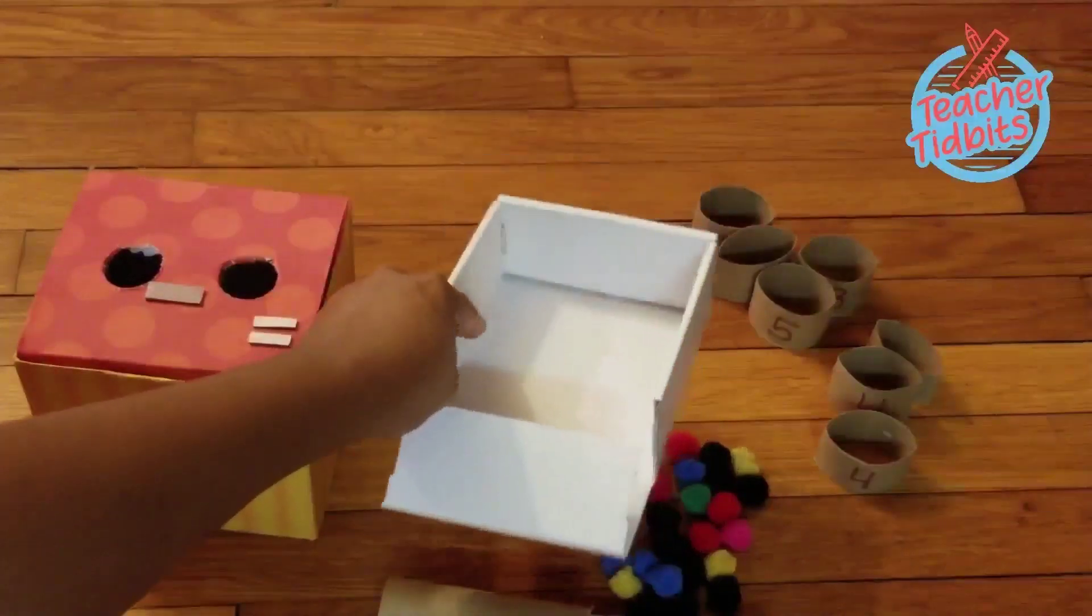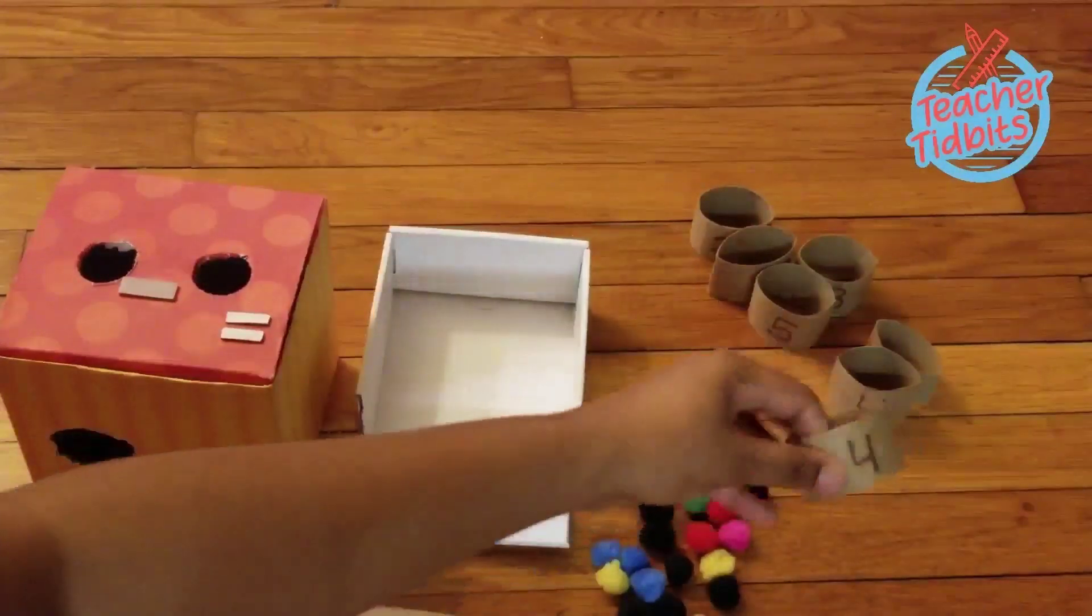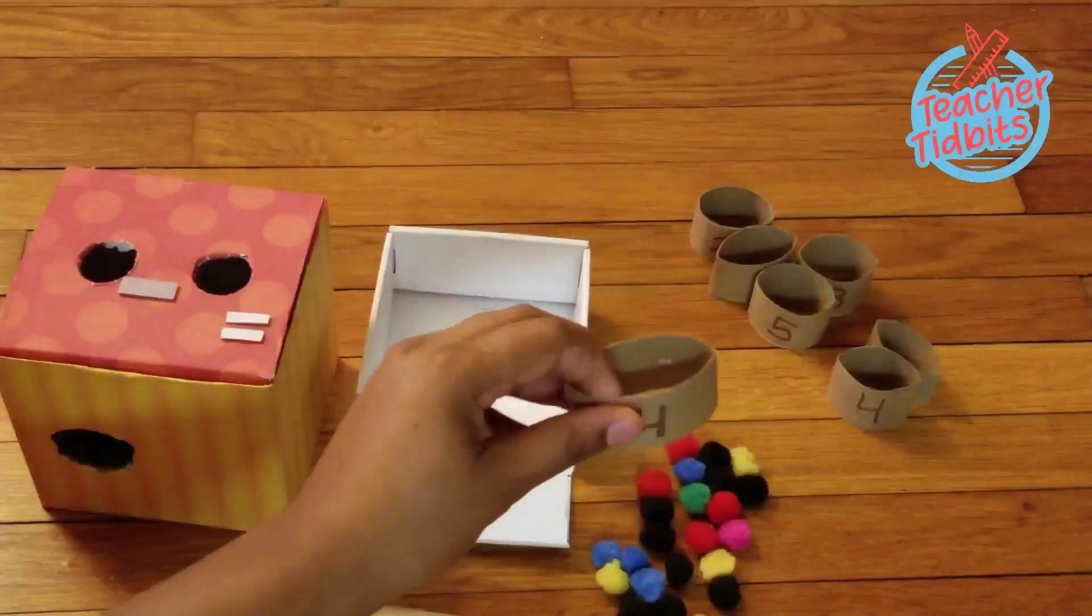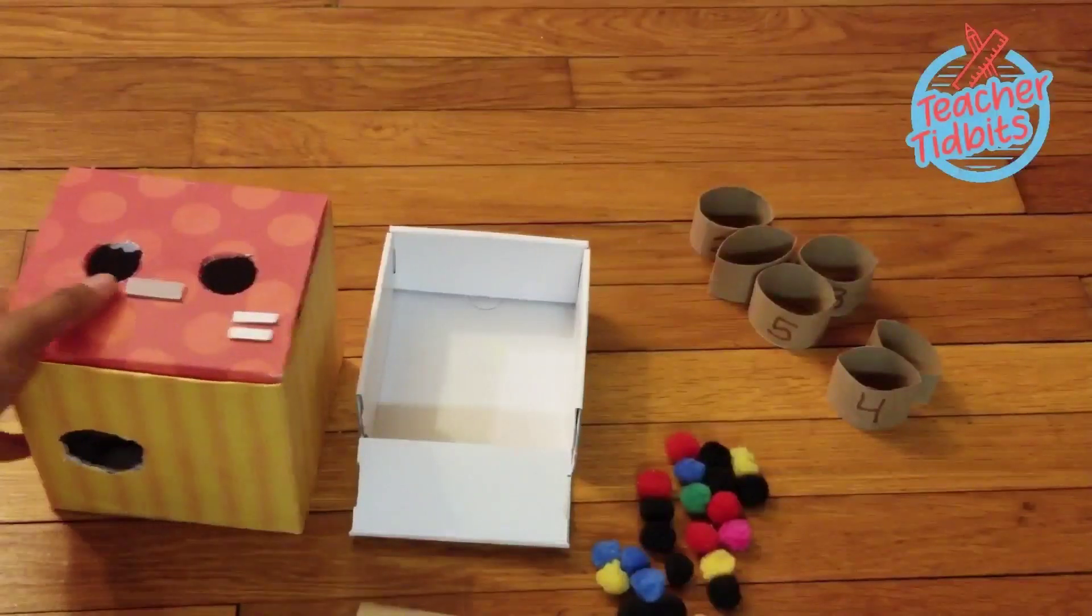I also have here this piece that came with the box. I'm going to be using that as a tray. You can make this yourself by simply cutting another box in half. You're going to have some pom poms or anything that can roll down as well as your paper towel cutouts for your numbers.